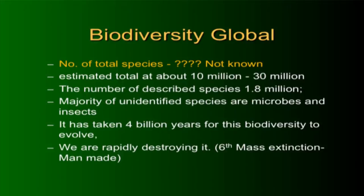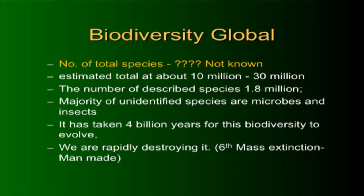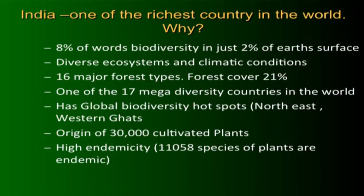It has taken 4 billion years to develop this biodiversity through evolution, and there have been five mass extinctions — all natural. Extinction and evolution are natural processes. But now the rate has increased a thousandfold due to human activities, so the sixth mass extinction will be man-made.